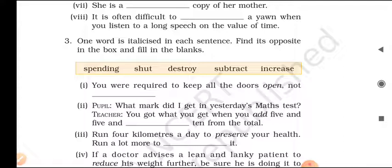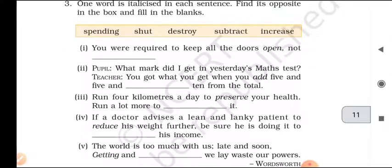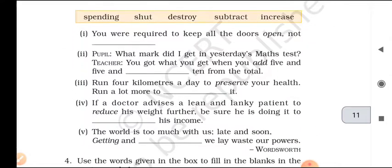Exercise number three: One word is italicized in each sentence. Find its opposite in the box and fill in the blanks. You are required to keep all the doors opened and not shut.